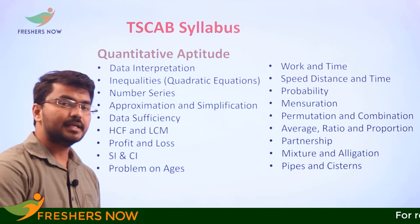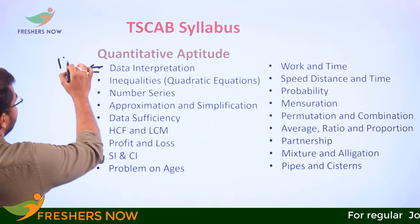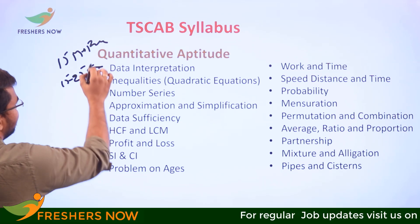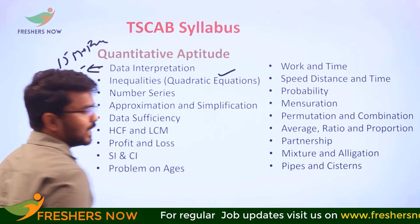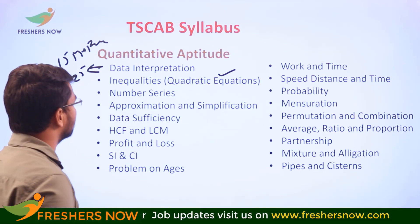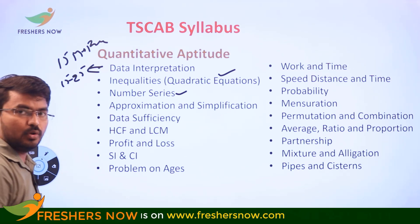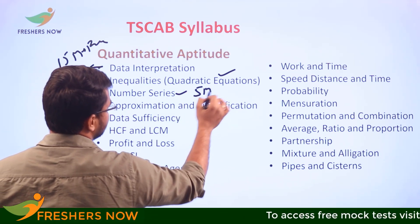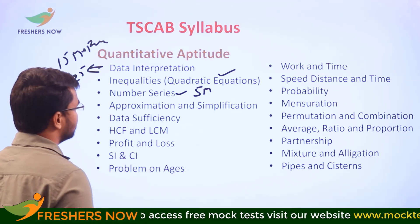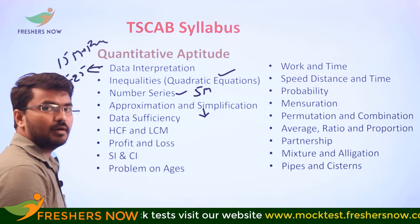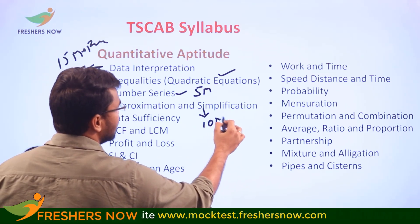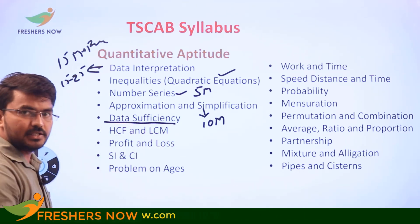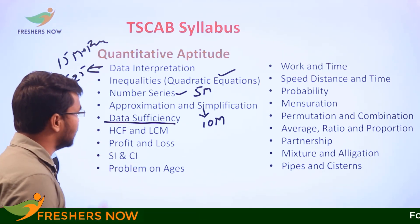In Data Interpretation, expect 15 to 25 marks in the preliminary and main exam. Quadratic equations carry a minimum of 3 to 5 marks in the preliminary exam. For number series, focus on wrong number series and missing number series. Simplification, either approximations or regular, is worth nearly 10 marks in the preliminary exam. Data sufficiency is a regular topic appearing in both reasoning and quantitative sections, carrying one to two marks for individual concepts.